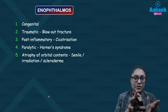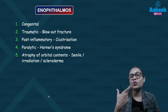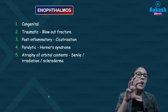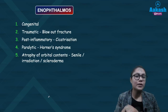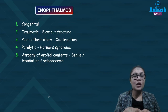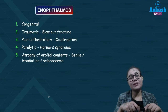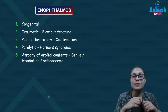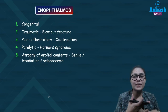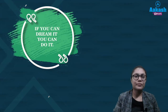The opposite of proptosis is enophthalmos, where the eyeball has sunk into the orbit. It can be congenital, post-traumatic as in blowout fracture, post-inflammatory due to cicatrization, secondary to Horner syndrome, or due to atrophy of orbital contents following irradiation or senility.